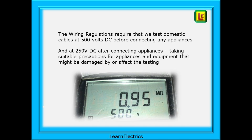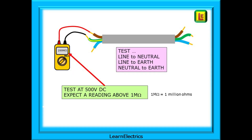The wiring regulations require that we test domestic cables at 500 volts DC before connecting any appliances to the circuit, and then at 250 volts DC after connecting appliances, taking suitable precautions for equipment that might be damaged by the testing. We will test at 500 volts DC between the ends of all the conductors, taking two conductors at a time. The test meter is connected at one end and the other end is left open with no connector blocks. For single phase circuits we will test the three combinations of line to earth, line to neutral, and neutral to earth, expecting a high ohms reading each time - above one mega ohm or one million ohms. With a new installation we should expect readings that max out the meter: 200 mega ohms on my meter, 500 mega ohms on others and even higher.